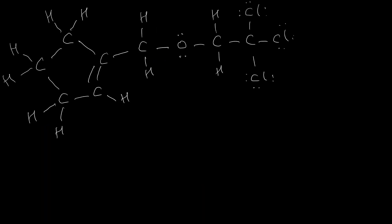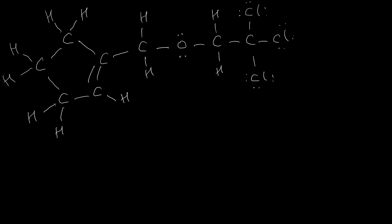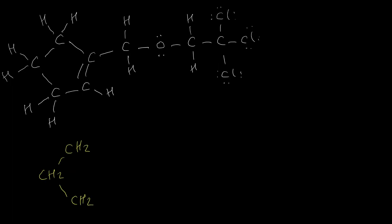Here is the next example — we have a cyclic compound, and we do the same thing. It doesn't matter if it's a linear or cyclic structure. We have CH2 CH2 CH2 CH2, then the next one is CH, and the next one is just carbon.